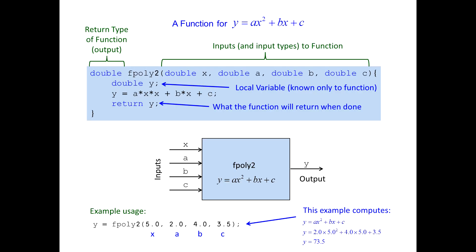Let's look at how a function looks in C. For this example we'll use a quadratic equation — we want to compute the y value of this quadratic. The function we're going to compute is y equals ax squared plus bx plus c, and we're going to call the function that computes this fpoly2.